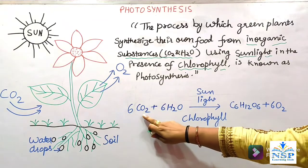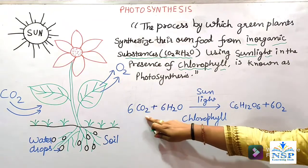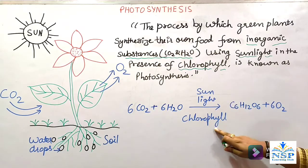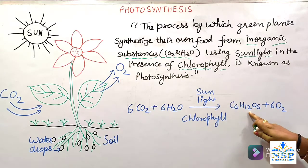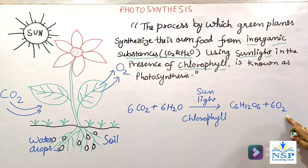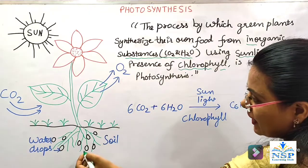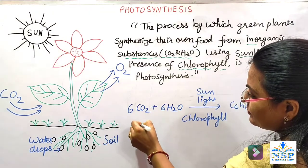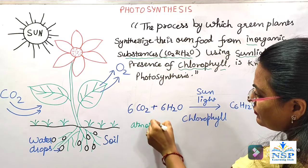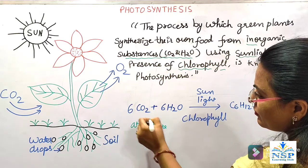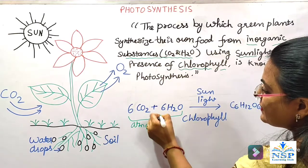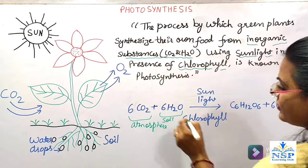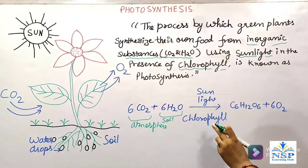Carbon dioxide की 6 molecules और water की 6 molecules मिलकर sunlight और chlorophyll की presence में glucose और oxygen बनाते हैं। तो carbon dioxide कहां से मिलती है? Atmosphere से। Water कहां से मिल रहा है? Soil से। Sunlight, sun से मिलती है।